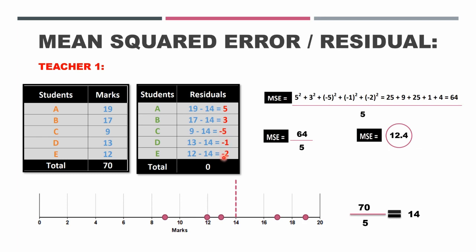So next step, what he did is he took the square of these errors and then took an average or took a mean of these squared errors. So 5 squared plus 3 squared plus minus 5 whole squared plus minus 1 whole squared plus minus 2 whole squared is giving me the sum 64.